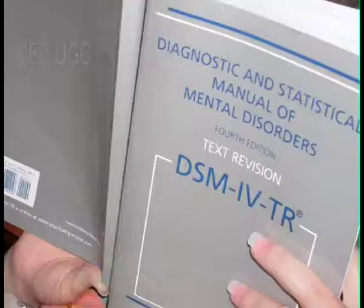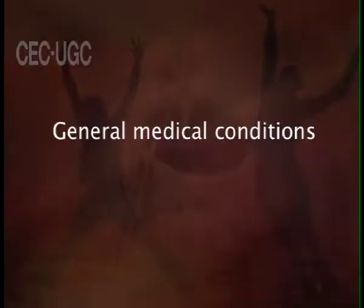Amnestic disorders are a group of disorders which involve loss of memories which have been previously established. There is also loss of ability to create new memories or loss of ability to learn new information. DSM-4 TR defines amnestic disorders as resulting from two basic causes: one is general medical conditions which produce memory disturbances, and exposure to a chemical which can be a drug of abuse, medication, or an environmental toxin. An amnestic disorder whose cause cannot be definitely established may be given the diagnosis of amnestic disorder not otherwise specified.